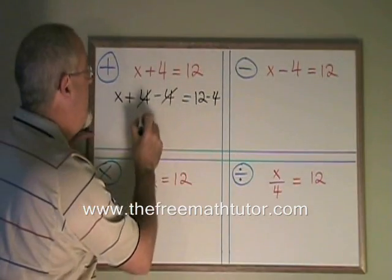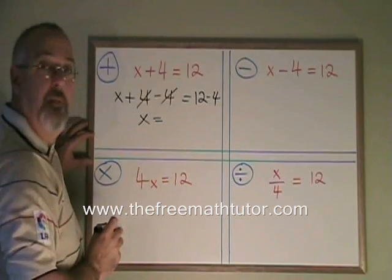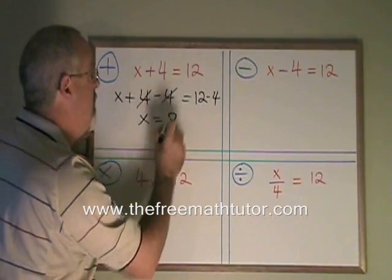These cancel. My x is now alone, which is what I wanted, and is equal to 12 minus 4, which is 8. I have my answer.